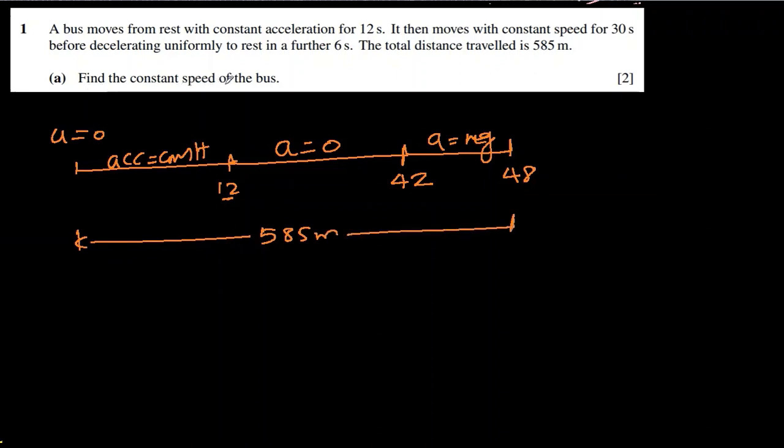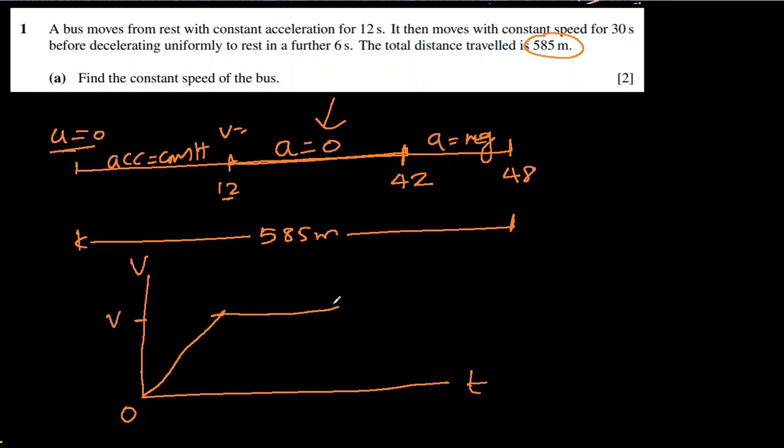Find the constant speed of the bus. Constant speed means they want to ask what is the speed here. Since they have given the distance traveled 585 meters and it is not turning back, a graph will be a good way of finding that v. Let's draw a vt diagram. First it starts from zero then accelerates at some rate. This time is 12, and this time is 42.